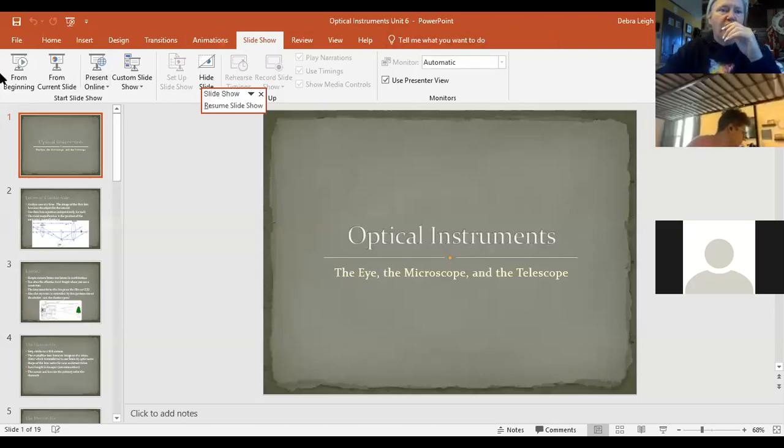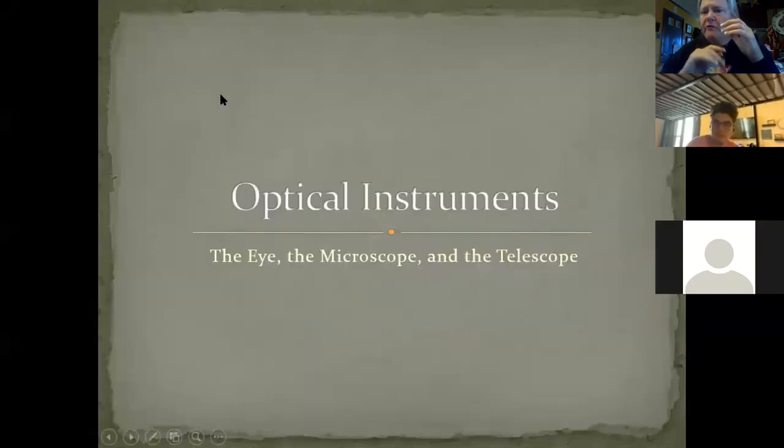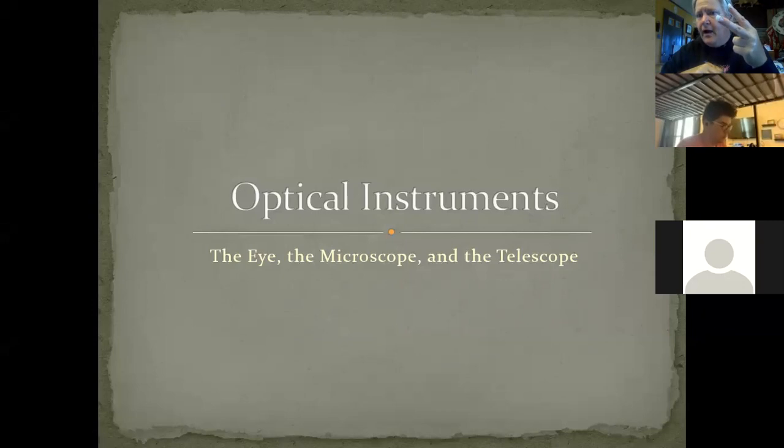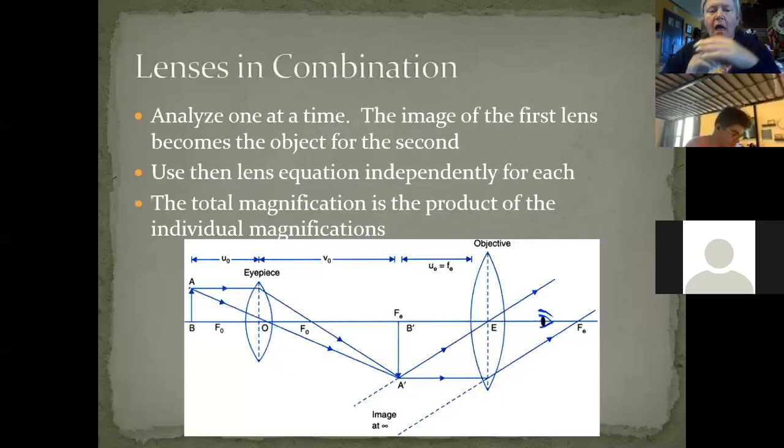Okay, so we can use ray tracing to figure out where an image is going to form and determine those three criteria for the image: is it real or virtual, is it upright or inverted, and is it enlarged or reduced? That's where we're going to go from here.